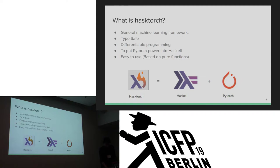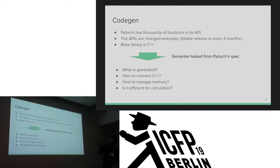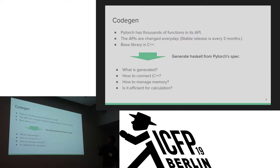PyTorch has thousands of functions, so the API changes every day, making it difficult to maintain, and it is written in C++. So we decided to generate Haskell bindings from PyTorch's spec automatically. In the next slide, I'll show what is generated and what the problems are.